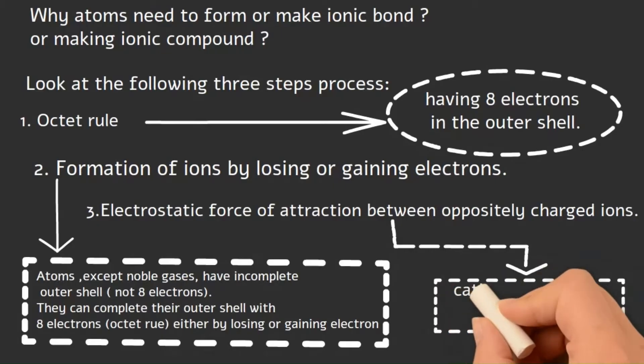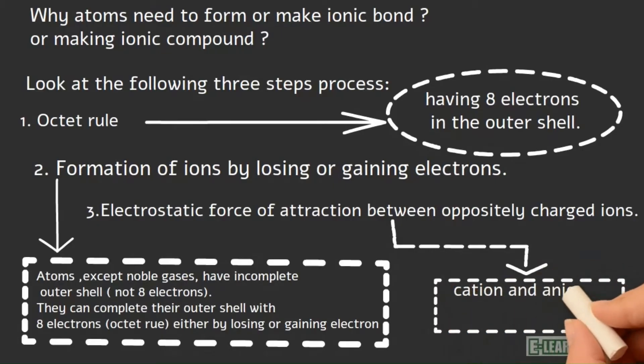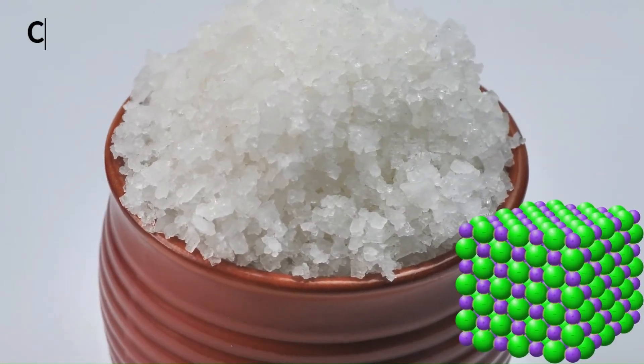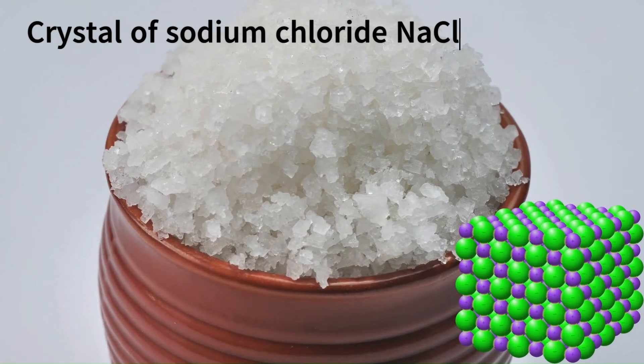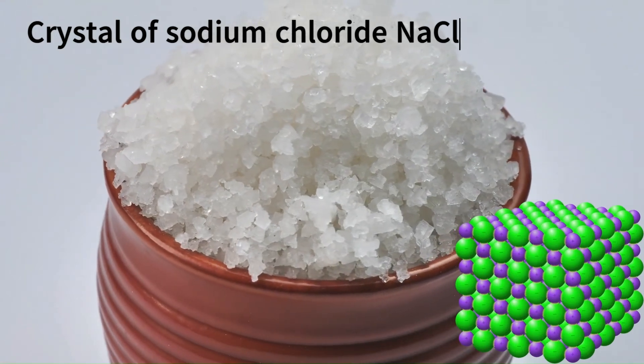Cations and anions attract each other. These are white solid crystals of the ionic compound.